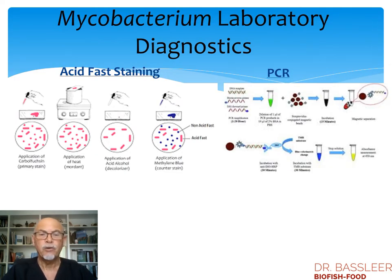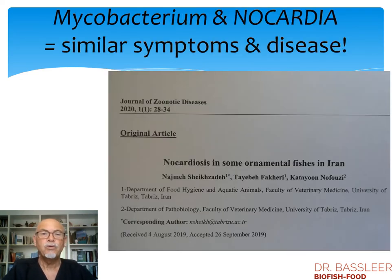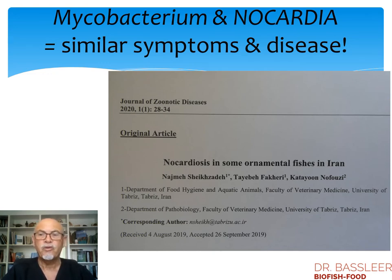In the laboratory, we can do diagnostics. We can use acid-fast staining to detect with the microscope the acid-fast gram-positive bacteria, mycobacterium, or we can do PCR testing. That's how laboratories do the work. We also find that similar to mycobacterium, there is also nocardia, which has similar symptoms and similar disease. A recent study on 220 fish in Iran showed it also found in ornamental aquarium fish. It's not as common as mycobacterium, but nocardia or nocardiosis can also play a role in ornamental fish.